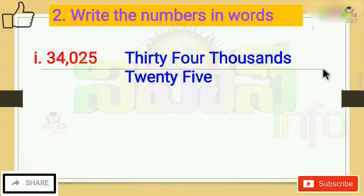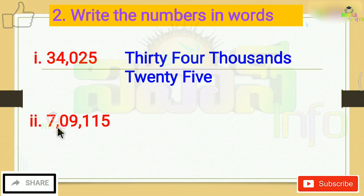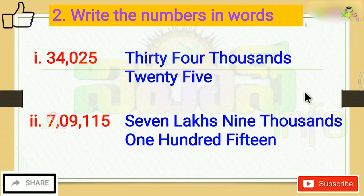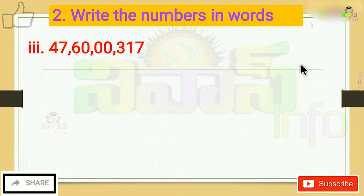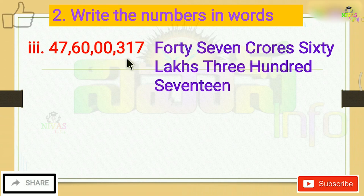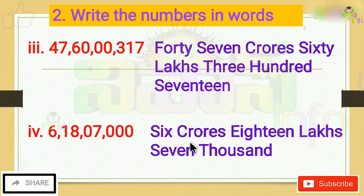The second problem is 7,9,115. We write out 7,9,115 in words. The next problem involves the number 6,18,7,000, which we also need to write in words.